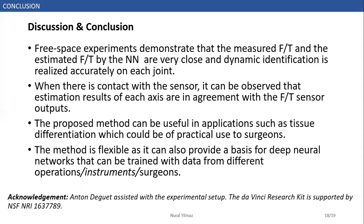Let me conclude my presentation here. First, our experiments show that the measured force torque and the estimated force torque by the neural network are very close to each other. It is clear that dynamic identification is realized accurately on each joint. In the case of contact with the sensor, in other words, if there is external force acting on the robot, estimation results in each axis are in agreement with the sensor output.